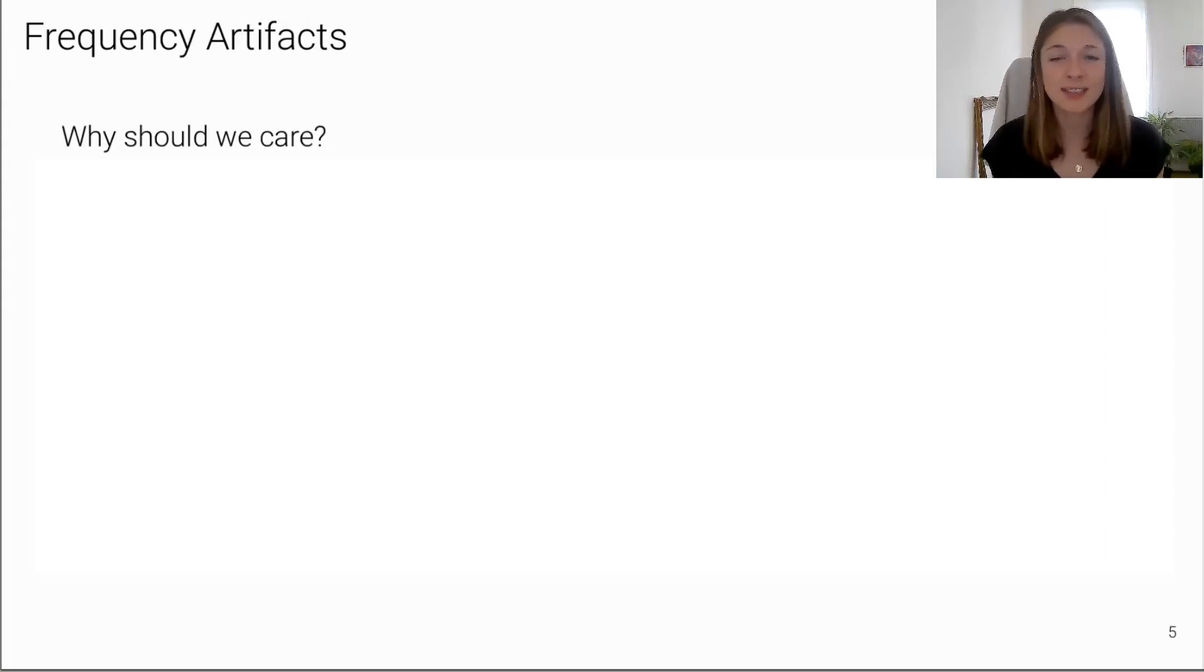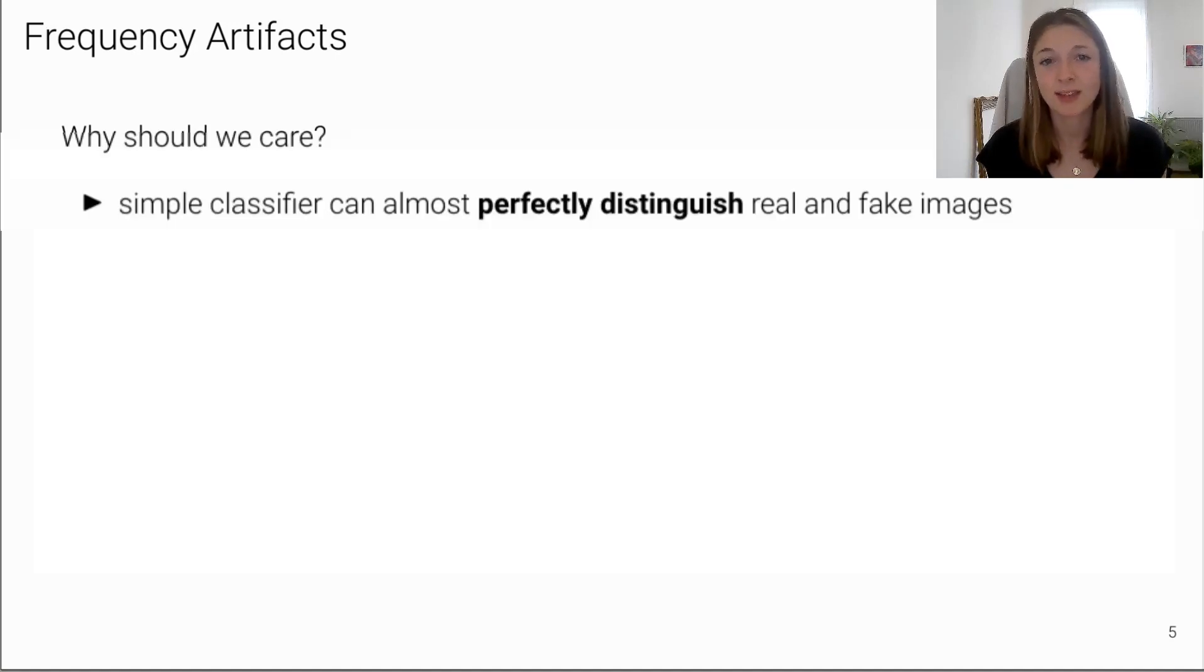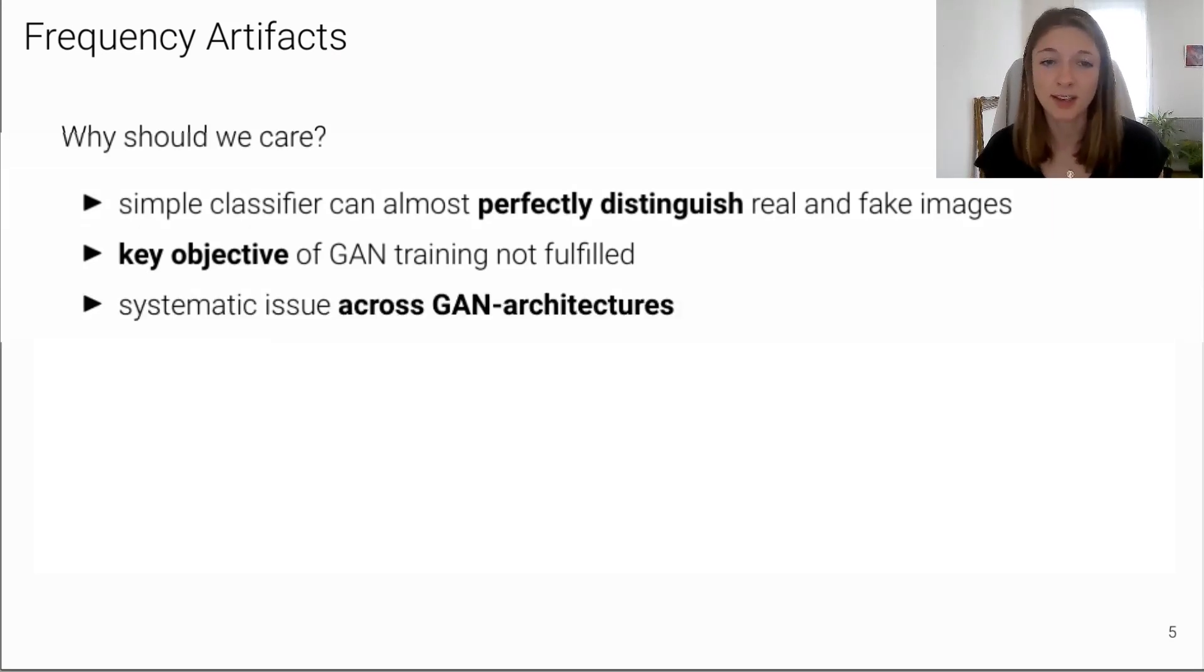So, why is this interesting? For now, we know that in the spectral domain, a very simple classifier can almost perfectly distinguish real and fake images. This makes it straightforward to see that the learned data distribution does not match the real data distribution. But this is the key objective when training the generative model. Further, this can be observed across all common GAN architectures, which indicates that it might be a systematic issue.